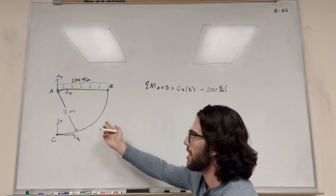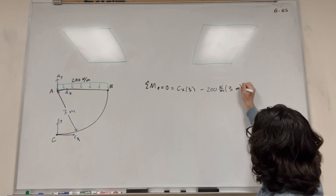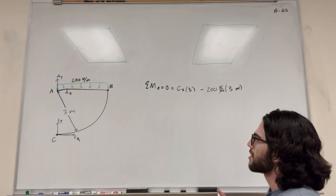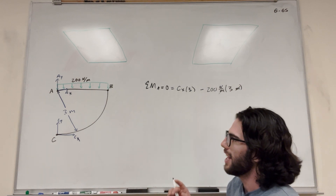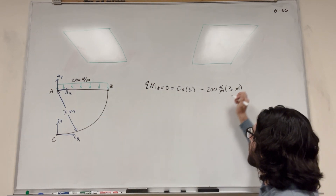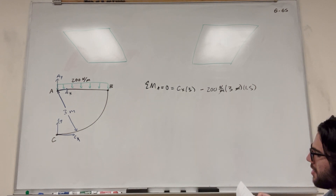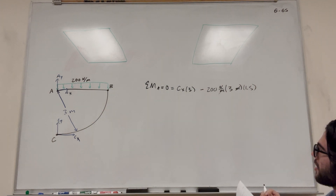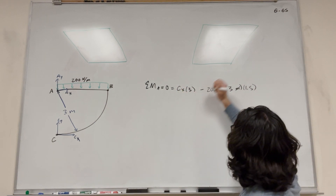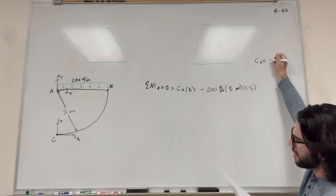This distributed force is going to want to push us clockwise, so we subtract that. We need to convert the distributed force into one force and one distance. It's a uniform distributed load, so its center is at halfway — 1.5 meters — and we know it's 200 newton-meters. So we subtract 200 newton-meters, multiply by how many meters it acts on (three meters), then multiply by the distance to the center (1.5 meters). Solving this, Cx equals 300 newtons.